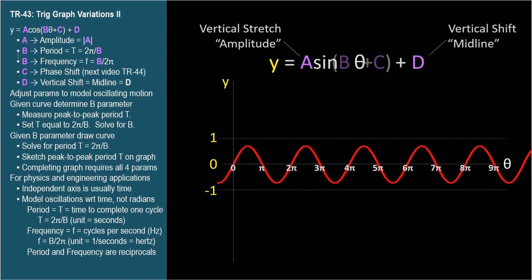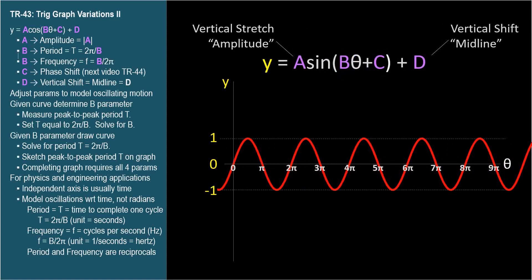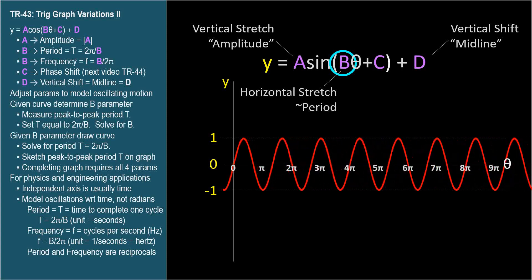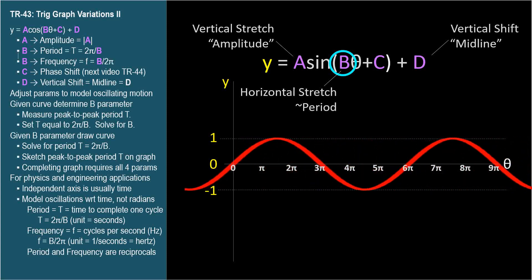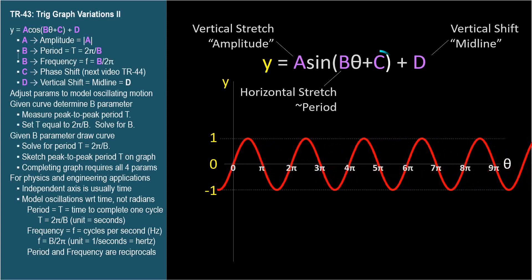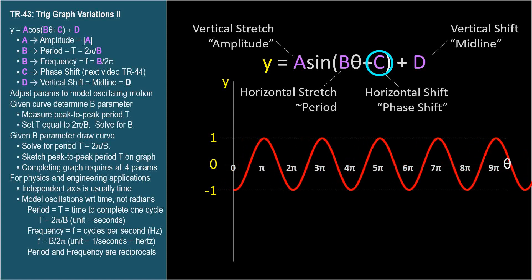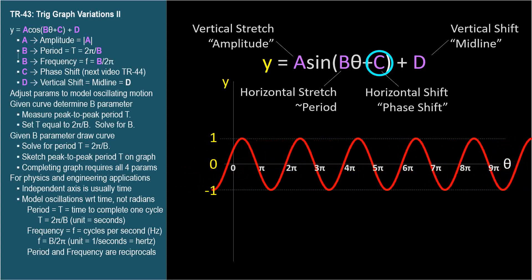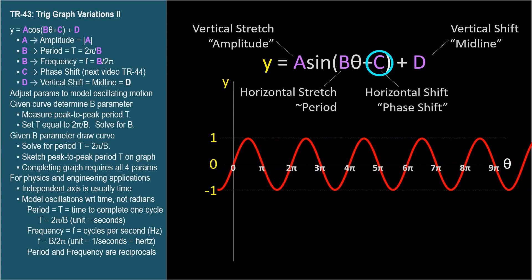Now we're going to introduce the last two parameters, b and c, which are horizontal versions of a and d. The b parameter stretches or compresses the wave horizontally. It's related to the period that we saw in TR-18, but the period isn't b. And the c parameter is the horizontal or phase shift, moving the entire graph left or right. This video will focus on the b parameter.